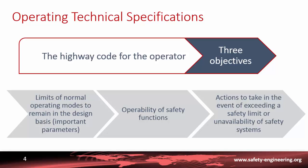For example, when calculating a loss of coolant accident, the increase in pressure and temperature of the containment uses an initial containment temperature of 50°C in the calculation. So it is important during normal operation to ensure that the temperature inside the containment remains under 50°C, and this is included in the Operating Technical Specifications.